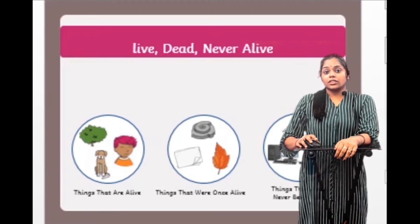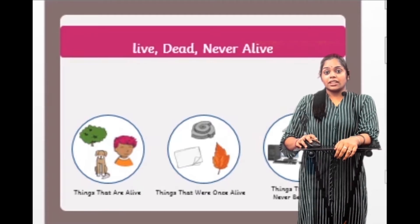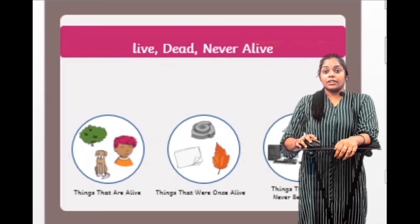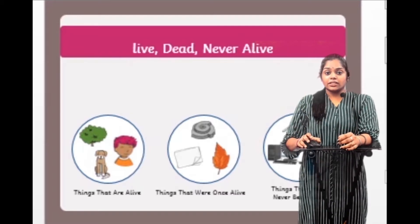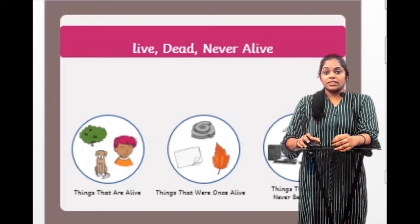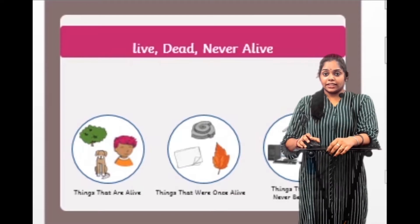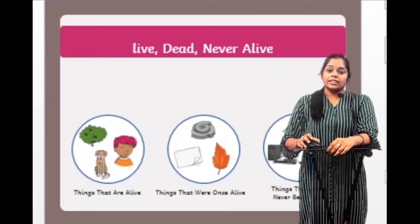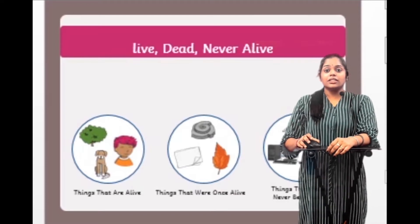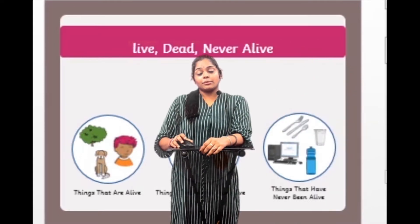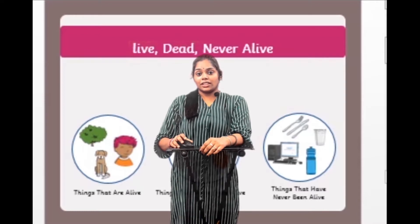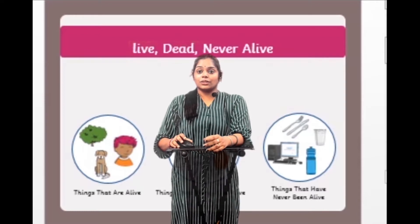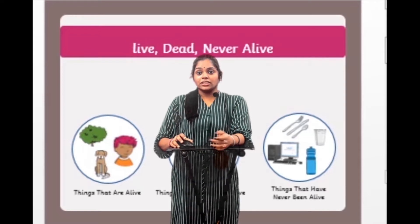The next circle contains things that were once alive: a fossil, a paper, and a dead leaf. In the third circle, you can see things that have never been alive — these are non-living things, like a water bottle, a cup, or a computer.